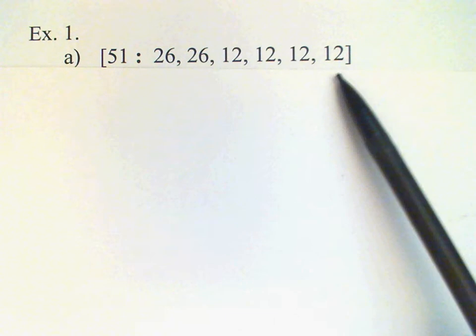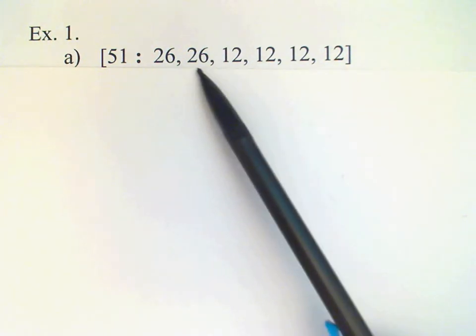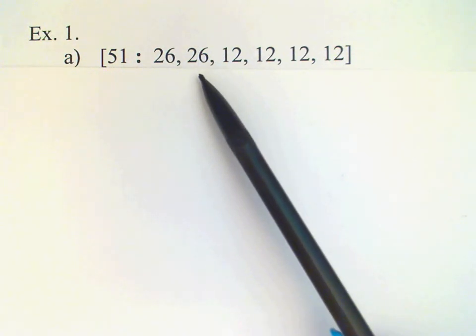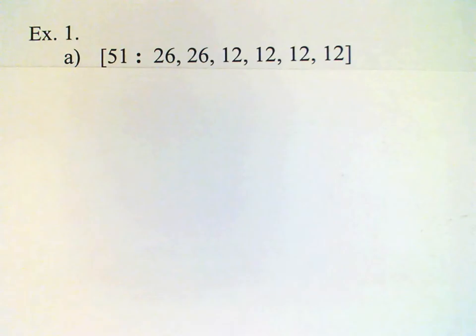What's interesting here is that if these two voters, the ones with 26, like a resolution, then that resolution will pass, because 26 plus 26 gives us 52, which is enough, even if none of the other four like the resolution.